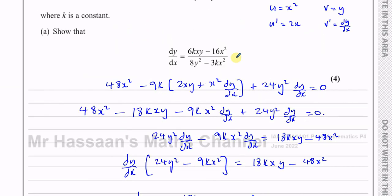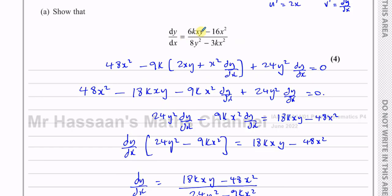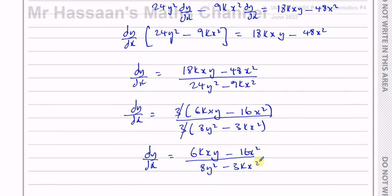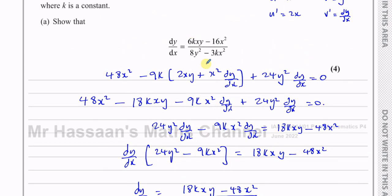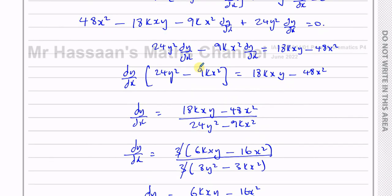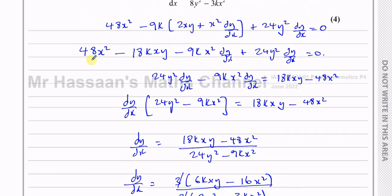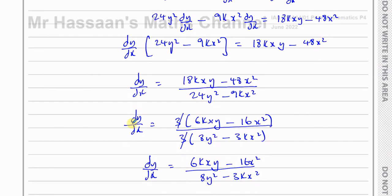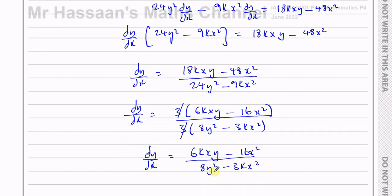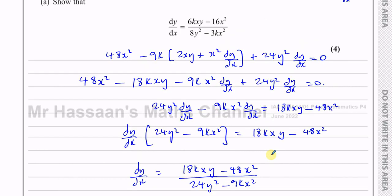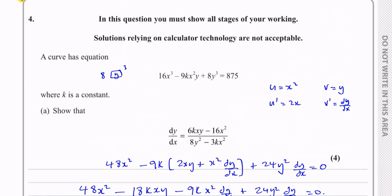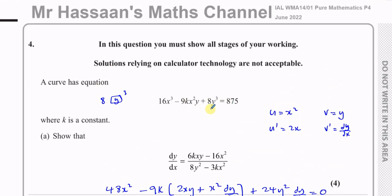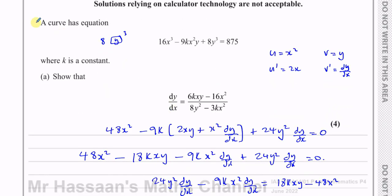That's exactly what we had to show: 6kxy minus 16x² over 8y² minus 3kx². In a question like this it's very important to show your steps clearly since you're being asked to prove a given result. That completes part a using implicit differentiation.